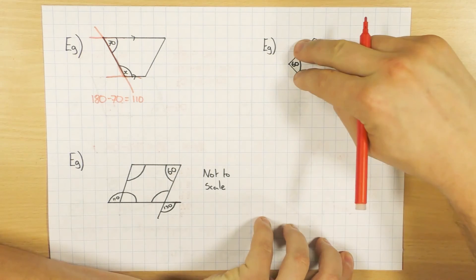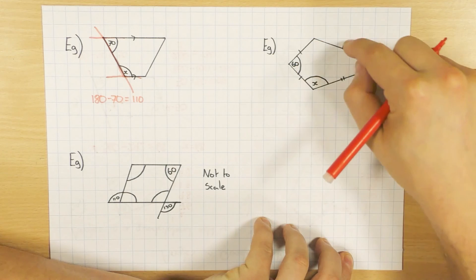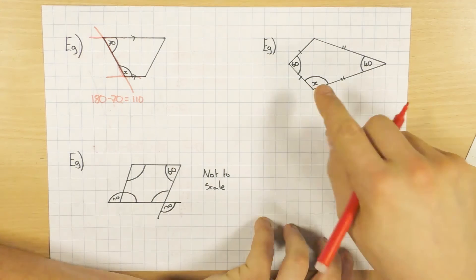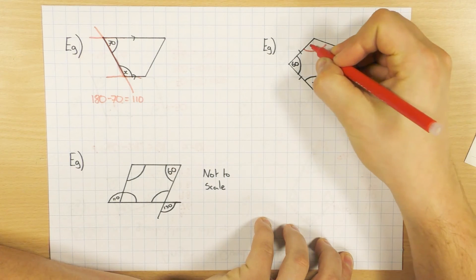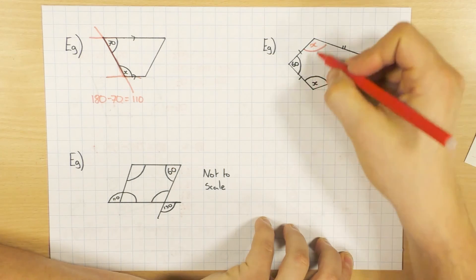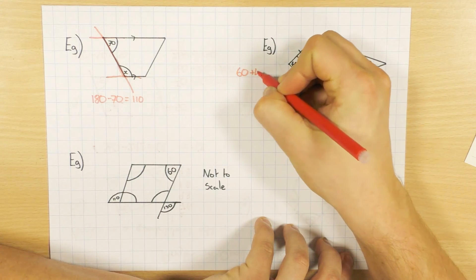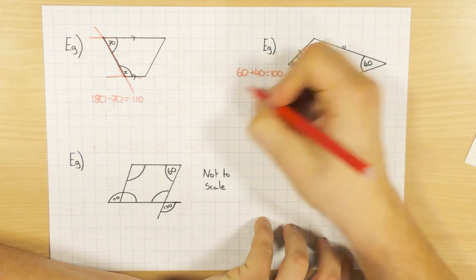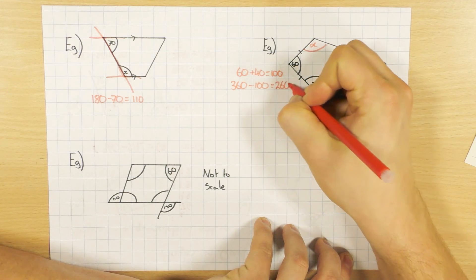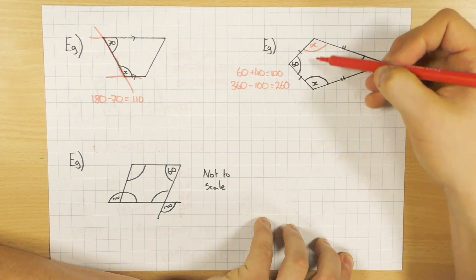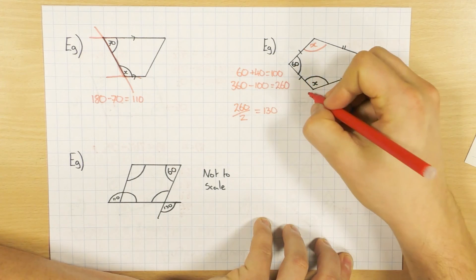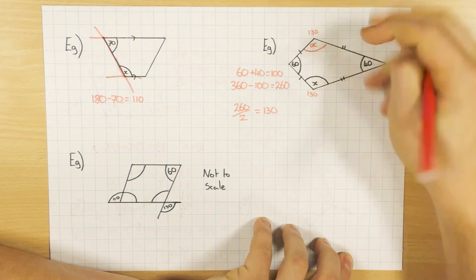Again I've got a kite here, because these two sides are the same — single dash, single dash — and these two sides are the same — double dash, double dash. But this time I haven't got that angle. Well, it's going to be the same as the other angle because it's a kite, so that's also x. Since I know they're the same, I can do the following: add sixty and forty together to get one hundred. Three sixty minus a hundred is two sixty. Because there are two equal angles that add up to two sixty, I just halve it: two sixty divided by two is a hundred and thirty. So both unknown angles are a hundred and thirty.